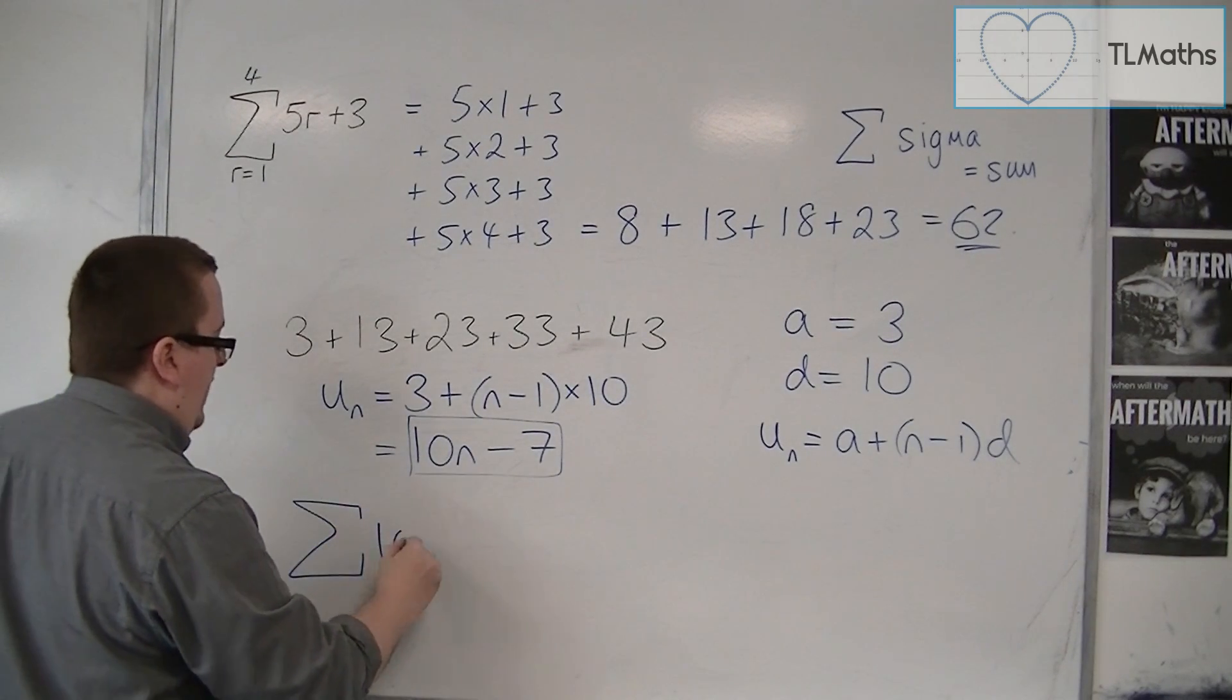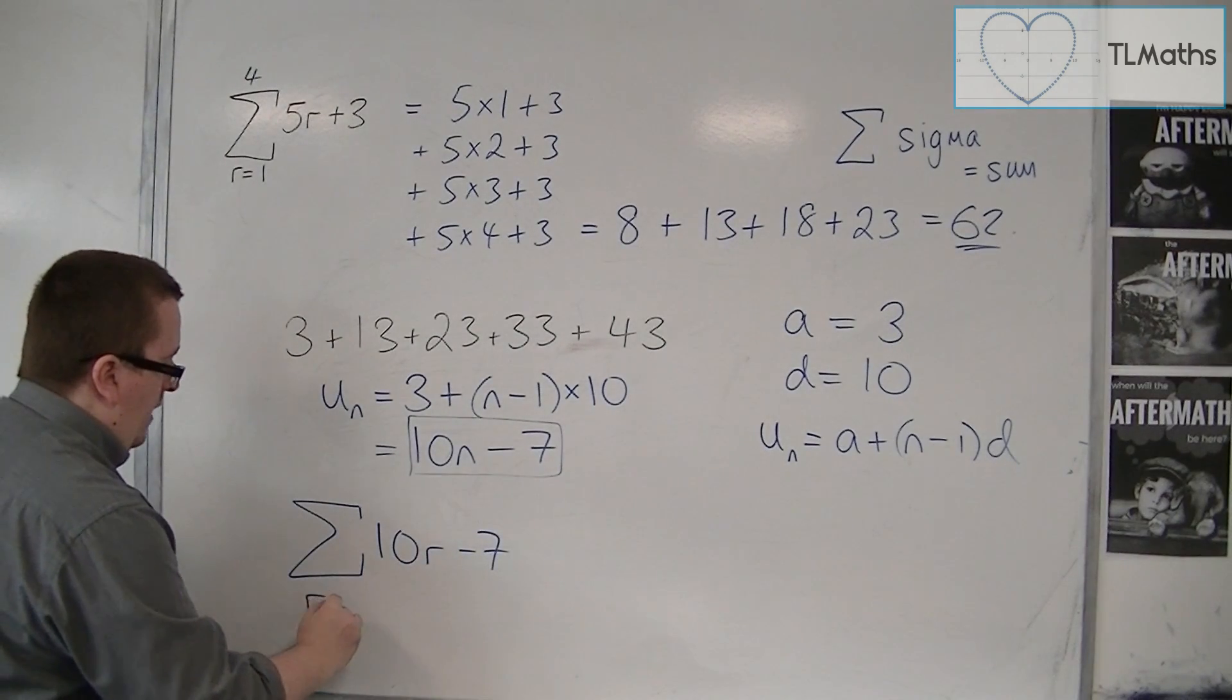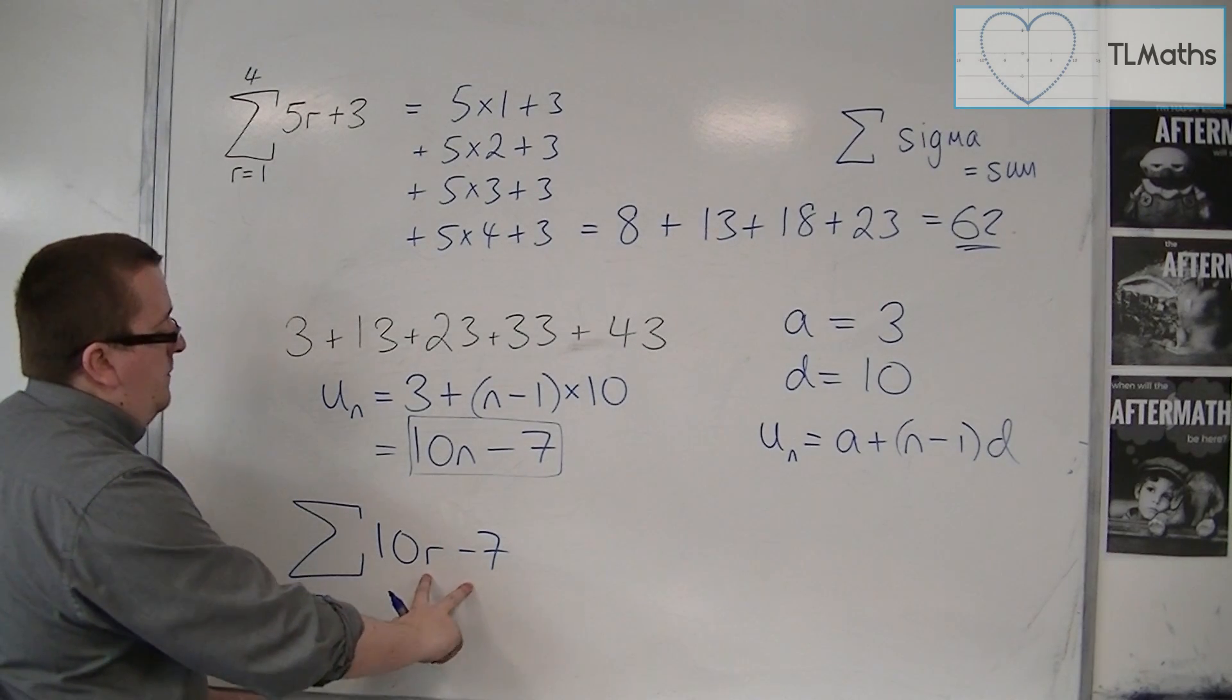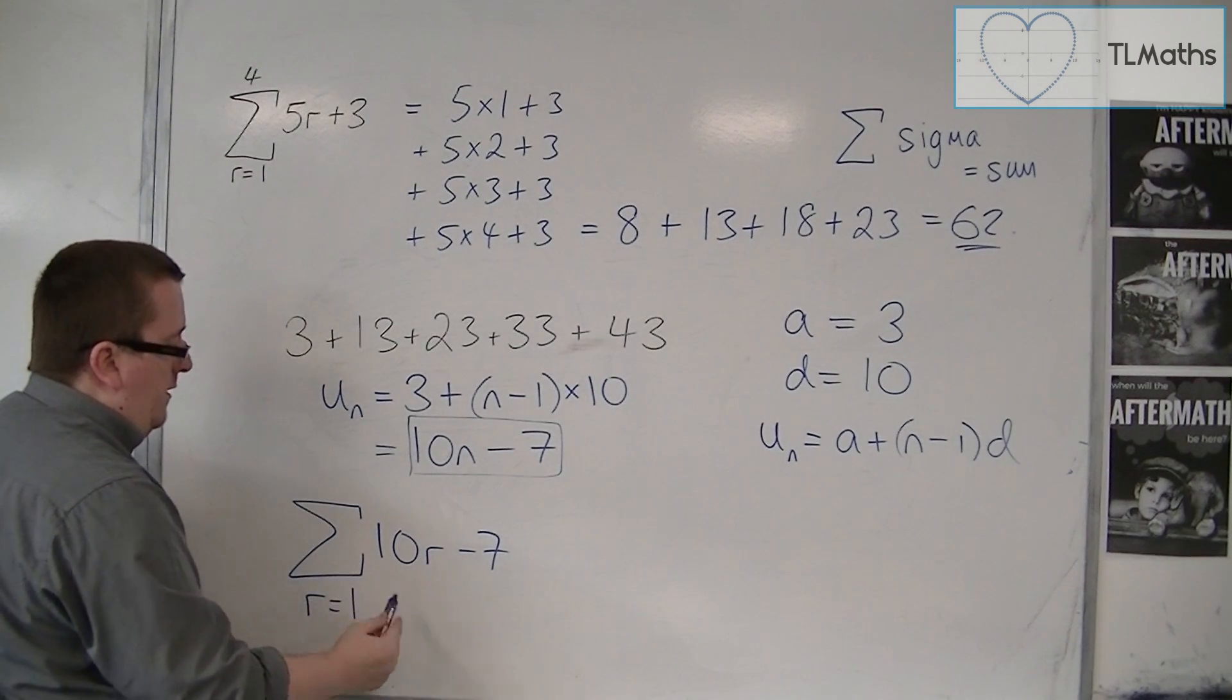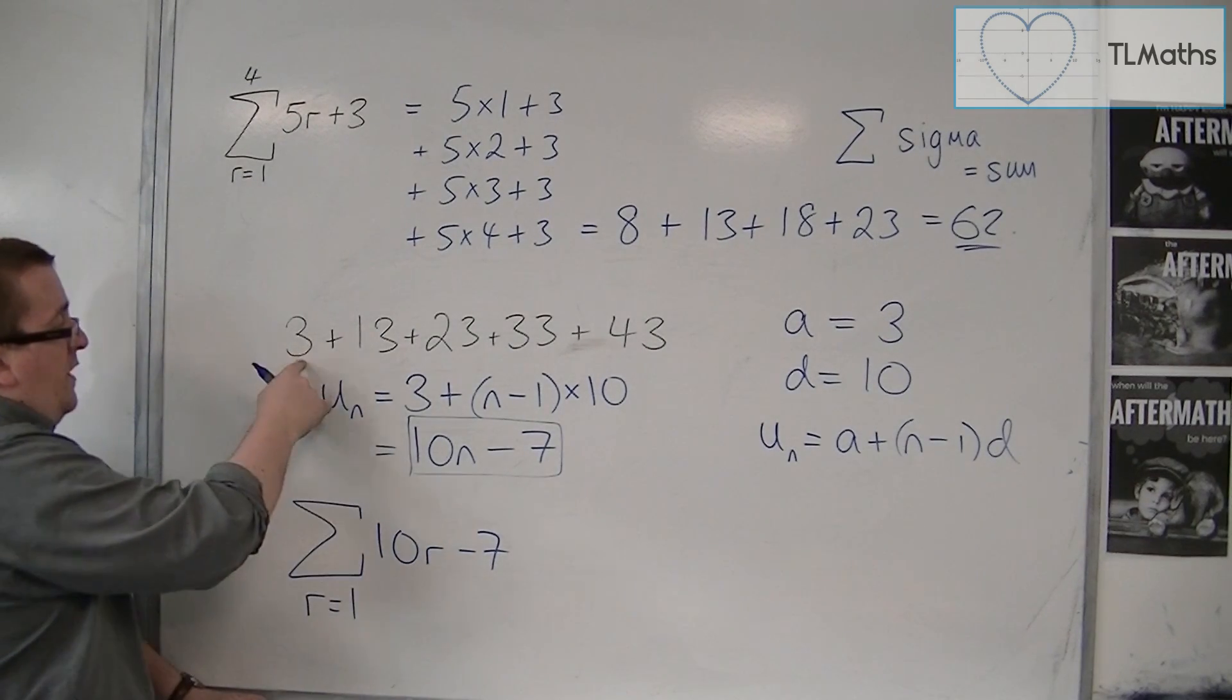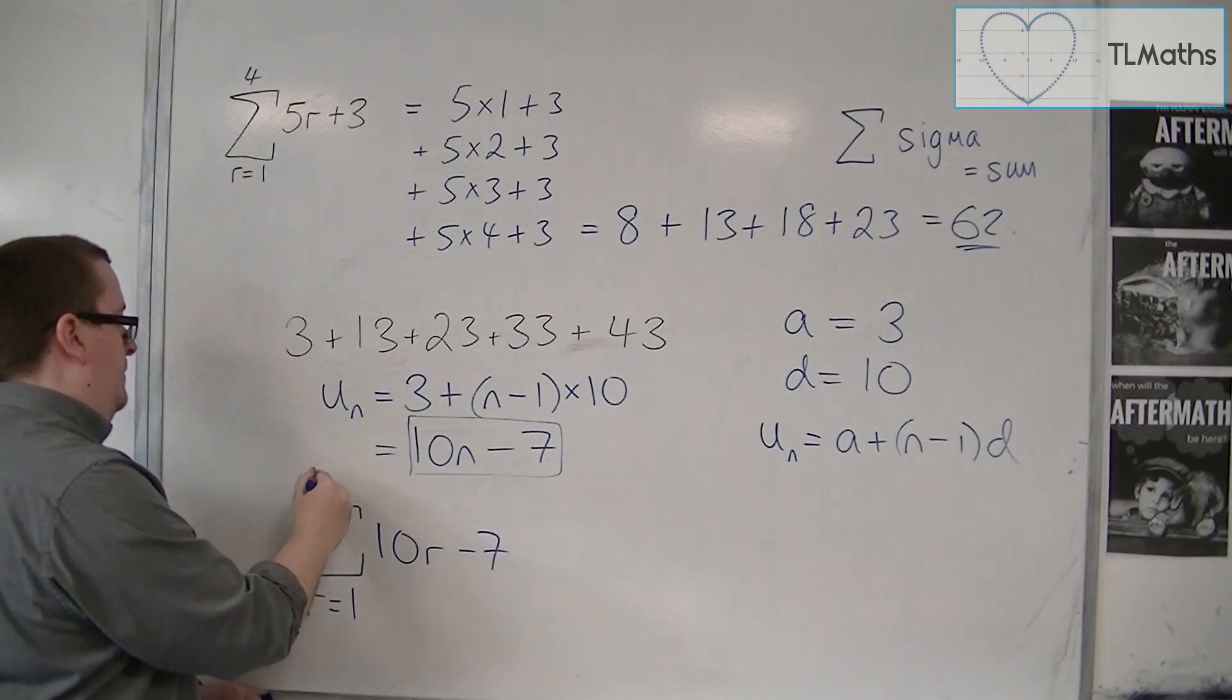So I'm going to have 10r minus 7, where r is going from, well, in order to get 3, r would have had to have been 1. 10 take away 7 is 3. And I'm going from the 1st, 2nd, 3rd, 4th, 5th term.